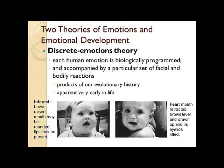First, there's discrete emotions theory. This is the idea that each human emotion is biologically programmed and accompanied by a particular set of facial and bodily reactions. The idea is that these are basically products of our evolutionary history and they are things that are common to all humans, so there's a very strong biological component — they are hardwired.